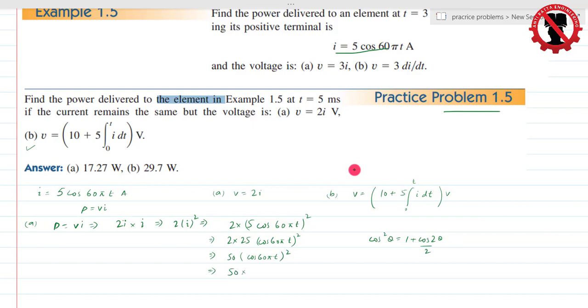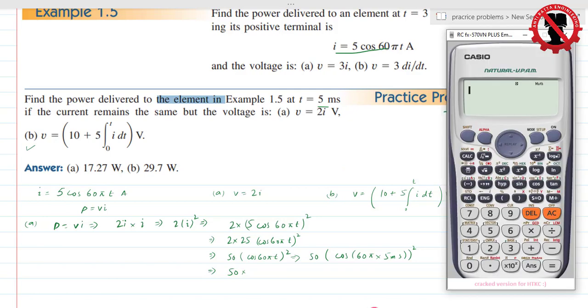So 50 into, now the value... time given is 5 millisecond. So this becomes 50 cos of 60 into pi into time value, which is 5 milliseconds, and the whole thing squared. So I'll use the scientific calculator. 50 into cos of... Shift mod, I'll go to radian mode, press 4. Now it's in radian mode.